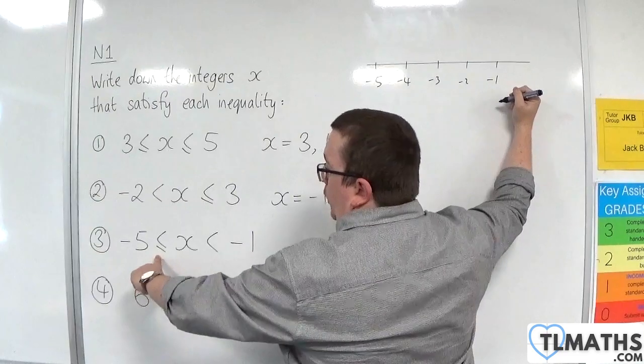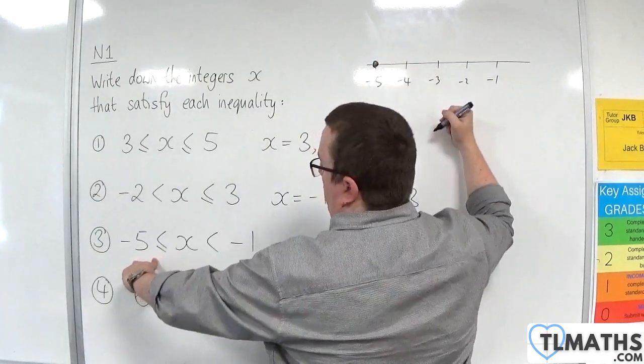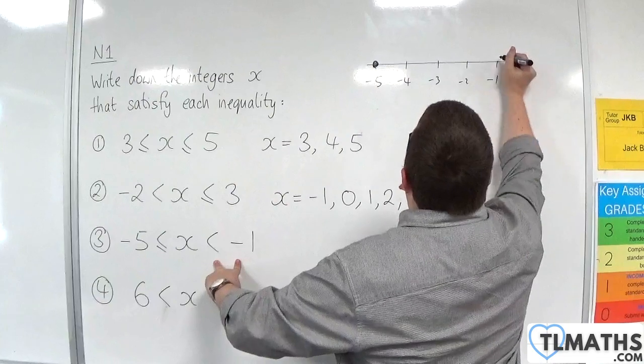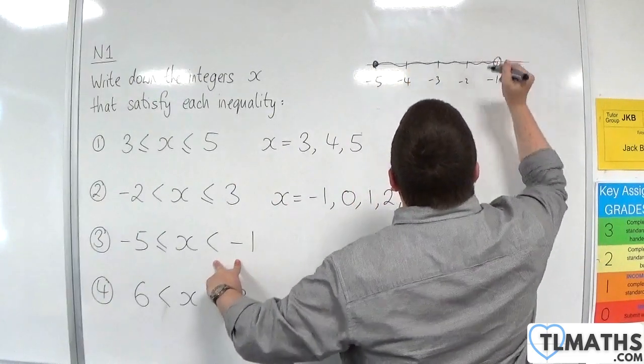Now, we're including minus 5, so a solid dot. We are not including minus 1, so a hollow dot. We want anything between.